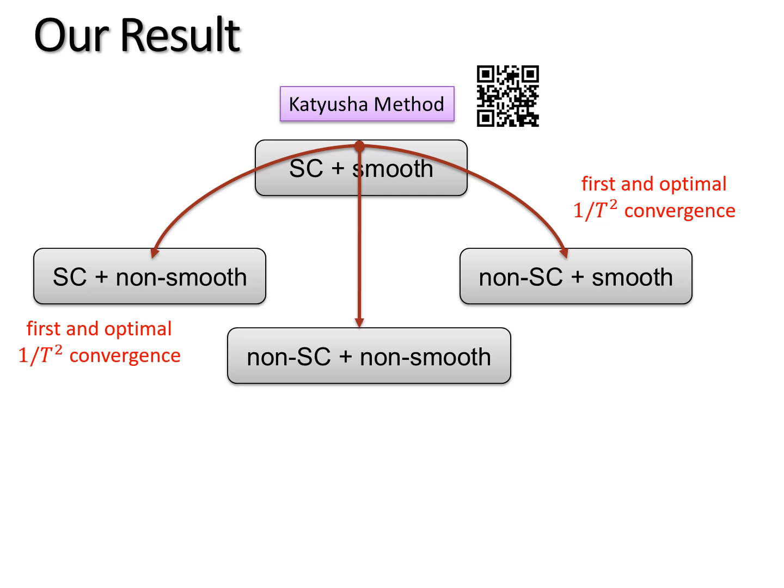One can also get 1 over t squared for the third class and 1 over t for the last class. That concludes my talk. Thanks for listening.